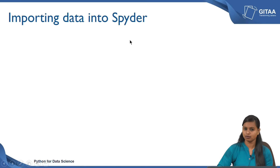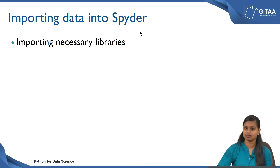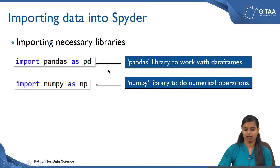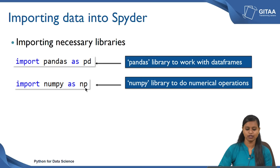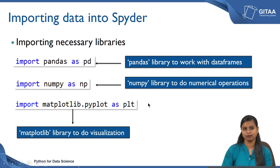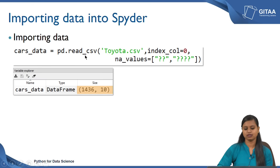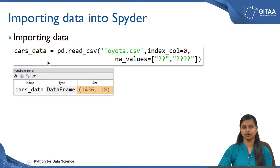We are going to import the data into Spyder to create a scatter plot. Prior to importing the data we have to import the necessary libraries. We import pandas as pd to work with data frames, numpy as np for numerical operations, and pyplot from matplotlib as plt for visualization. We can import the data using the read_csv command, setting the first column as the index column and treating question marks as NaN values. The data frame cars_data has 1436 rows with 10 columns.